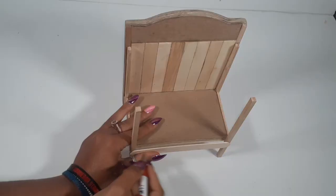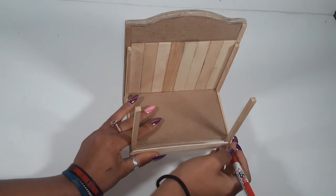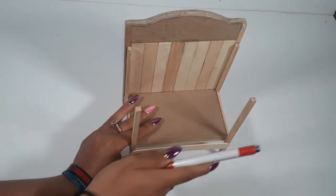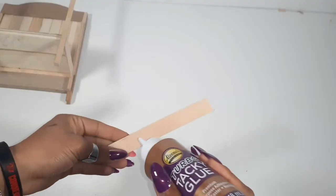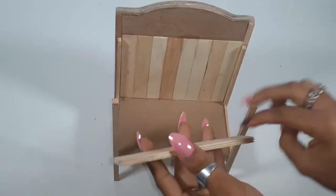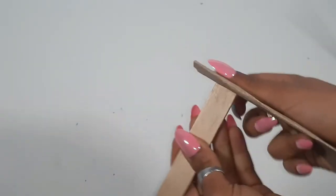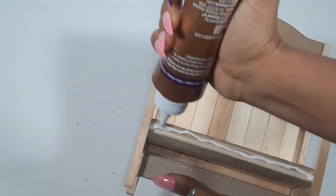We need to cover the front. I'm using more jumbo popsicle sticks. I'm marking where cuts are needed. Cut two more, start gluing. Glue all three together, then sand. Then we can start gluing it down.